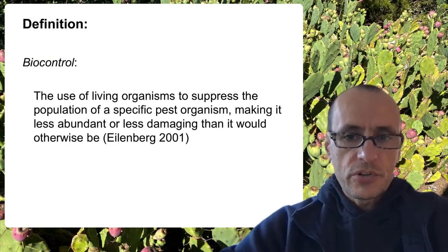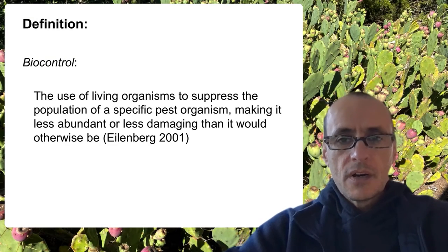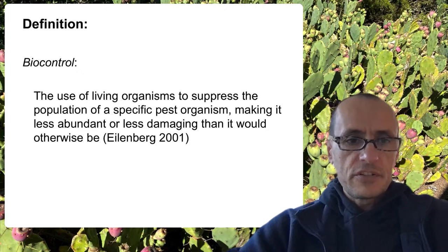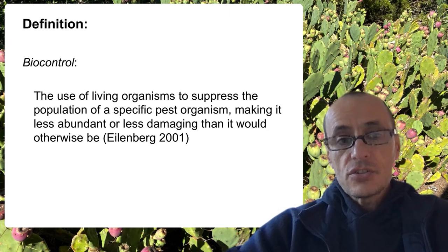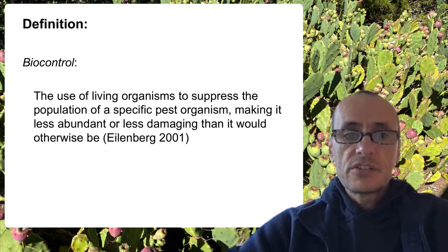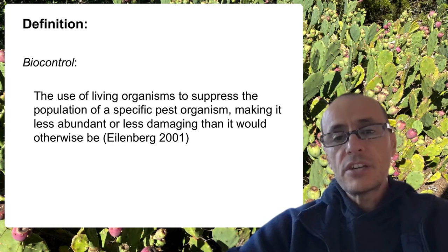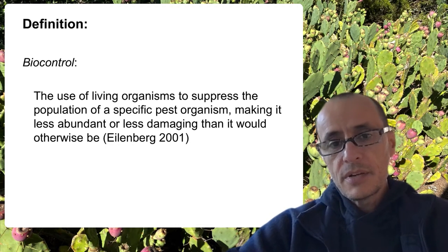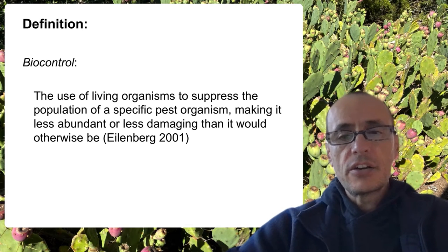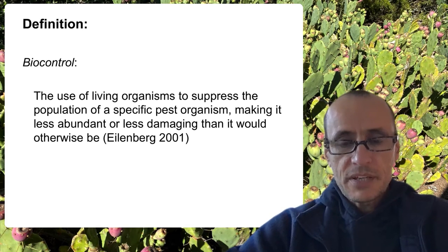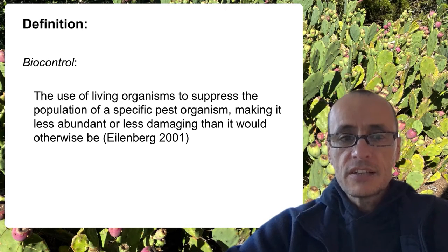What is biological control? One definition that's often used is this one by Eilenberg, that says it's the use of living organisms to suppress the population of a specific pest organism, making it less abundant or less damaging than it otherwise would be. It's very utilitarian.